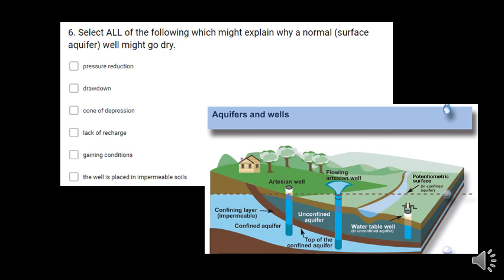Select all that might apply to why a normal or surface aquifer might go dry. The surface aquifer is the one that is up top next to the surface. That's also an unconfined aquifer.